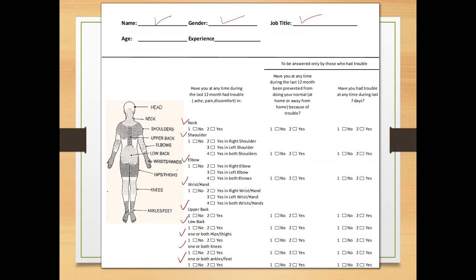If the answer to any of these questions is yes, the next question asked is: have you at any time during the last 12 months been prevented from doing your normal work at home or away from home because of the trouble? All answers related to all nine body parts here are binary in the form of no or yes. The third question is: have you had trouble at any time during the last seven days? Again, all answers related to all nine body parts are binary.